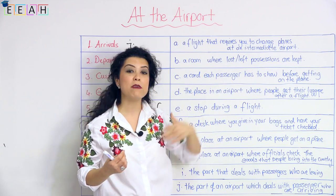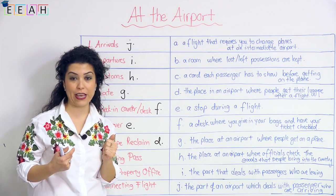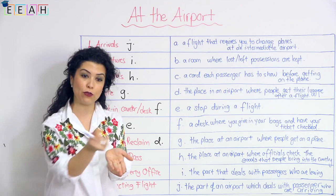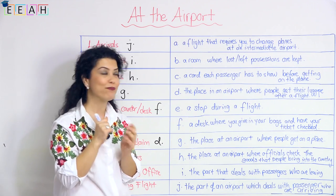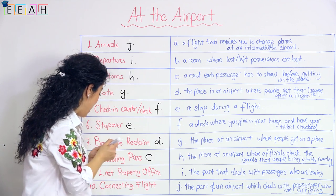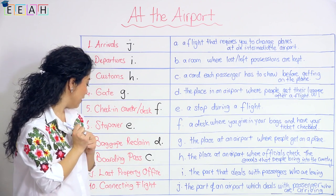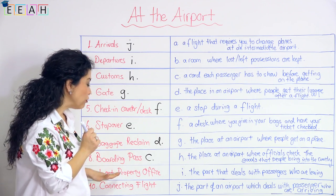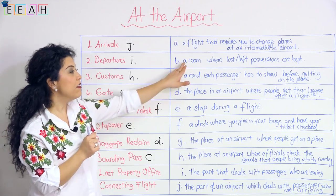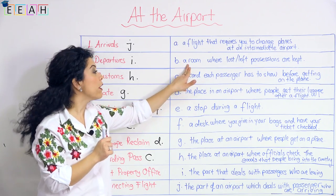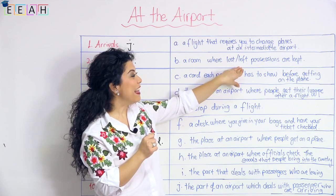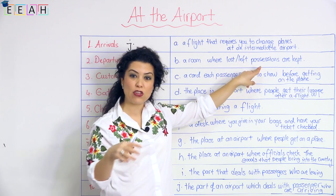Next: 'boarding pass.' A boarding pass is a kind of card — a card each passenger has to show before getting on the plane. You show your boarding pass and you get on the plane. That matches with C.